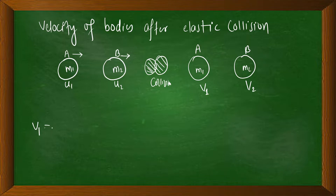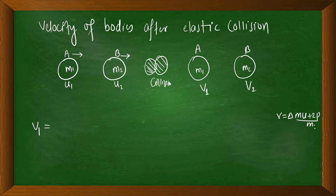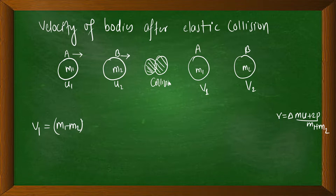The final velocity V1 is a simple thing. It is del of mass — M1 minus M2. If you calculate V1, then U1 is 1, and the formula involves M1 minus M2 divided by the total mass M1 plus M2.